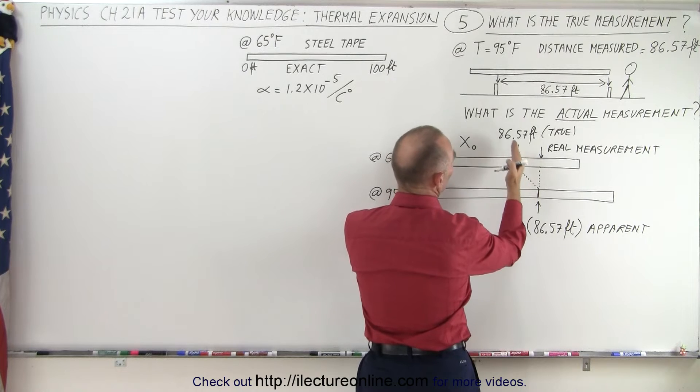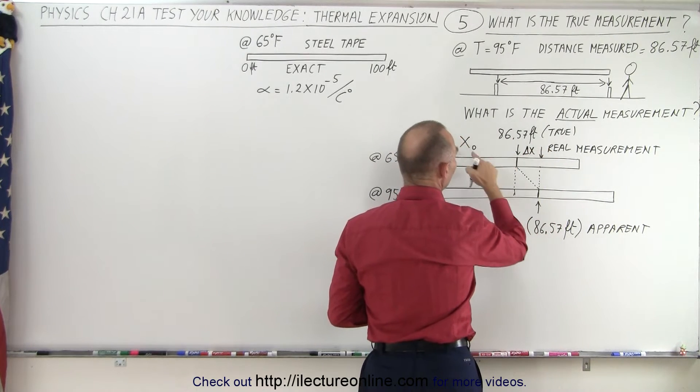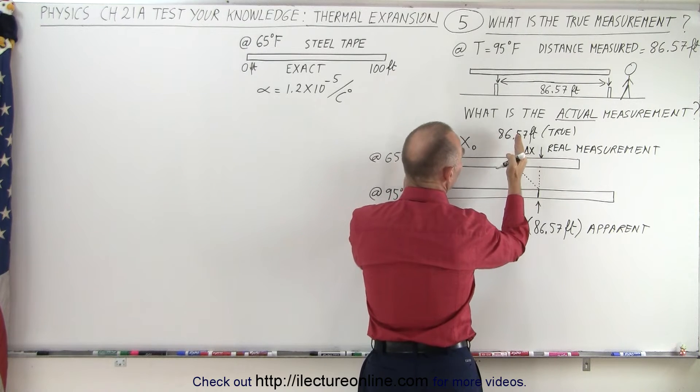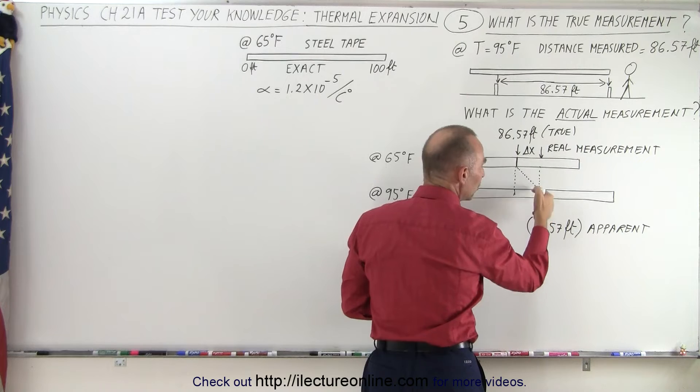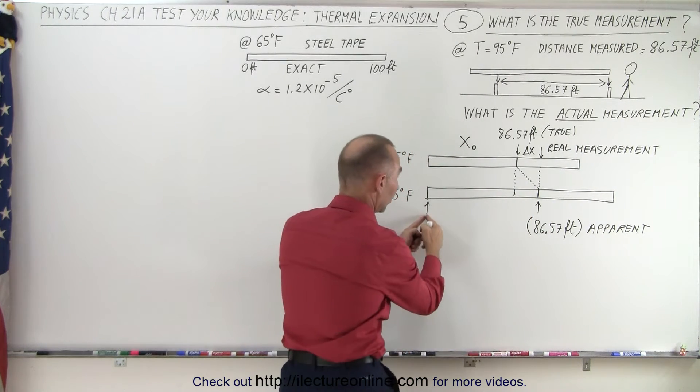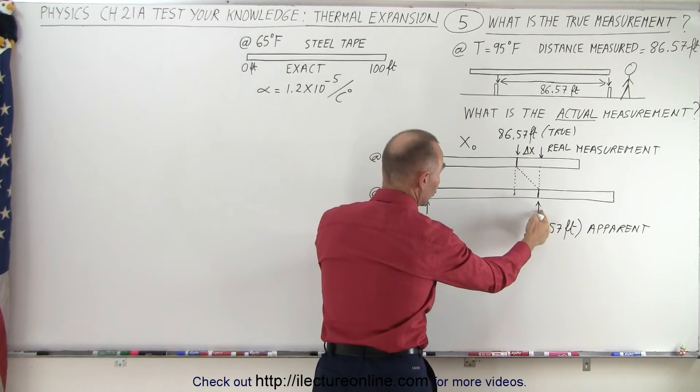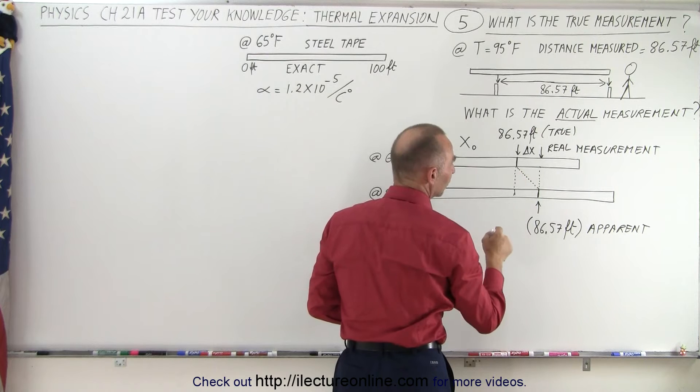If this is the true measurement of 86.57 feet, we can call this delta x. So we have x sub naught at 86.57, plus the delta x will give us the true reading of that particular point on the Earth from the starting point. So the true reading would be x sub naught, which is 86.57 feet, plus the delta x.